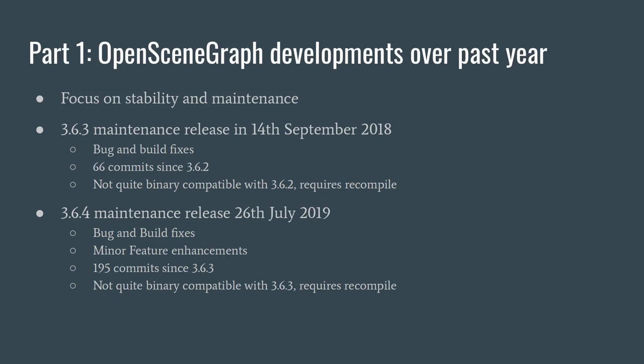Fast forward to July this year — the 26th of July, just a couple of days ago — I tagged the 3.6.4 maintenance release. Again it's focused on bug and build fixes. The community has also contributed a couple of minor feature enhancements, primarily to the plugins, so they don't really change the API significantly. There were 195 commits between 3.6.3 and 3.6.4 — quite a bit more changes than the previous maintenance release.